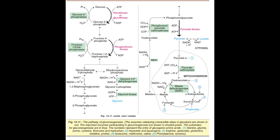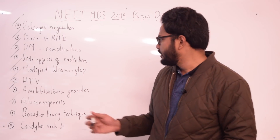In the gluconeogenesis flow chart, pyruvate carboxylase and malate dehydrogenase are present in mitochondria, whereas the remaining enzymes — phosphoenolpyruvate carboxykinase, glycerol-3-phosphate dehydrogenase, glycerol kinase, fructose-1,6-bisphosphatase, and glucose-6-phosphatase — are found in the cytosol. Pyruvate carboxylase and malate dehydrogenase are the mitochondrial enzymes.